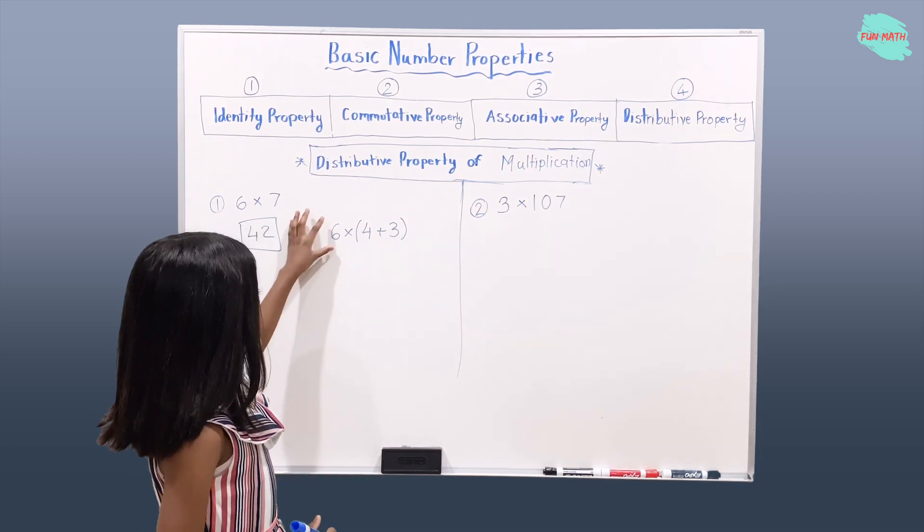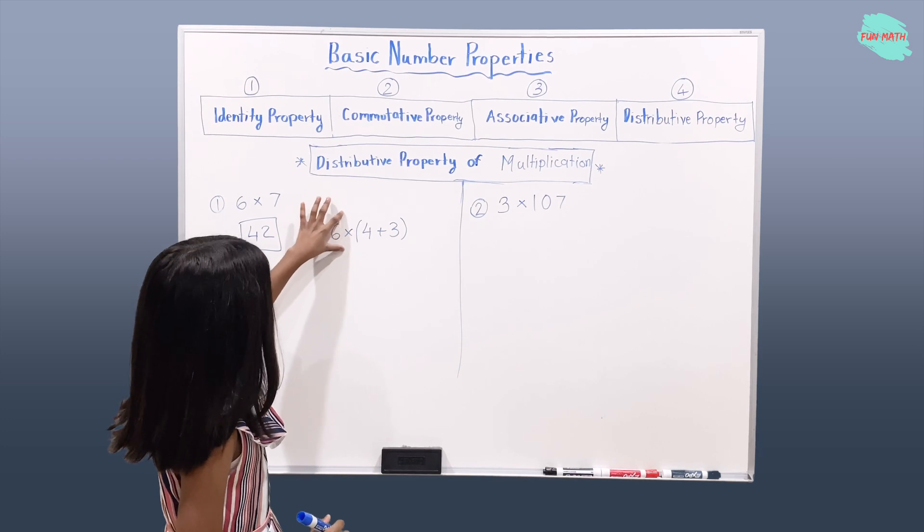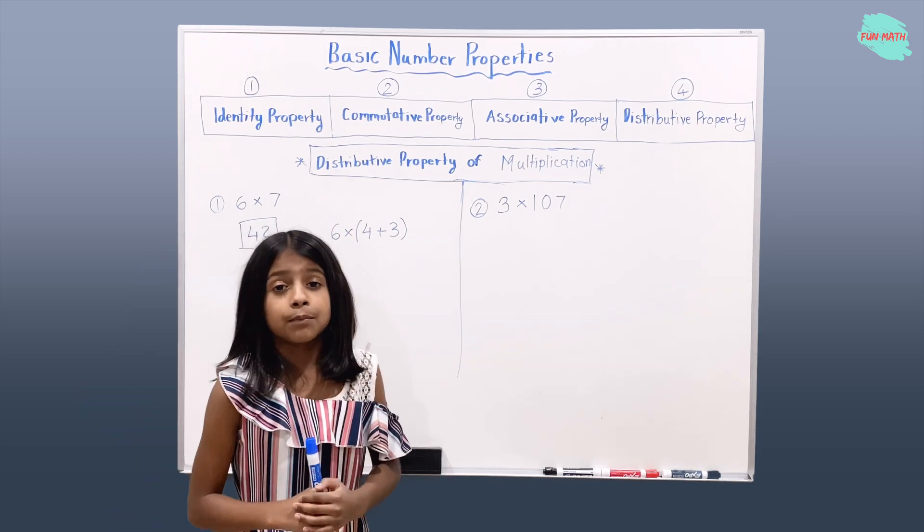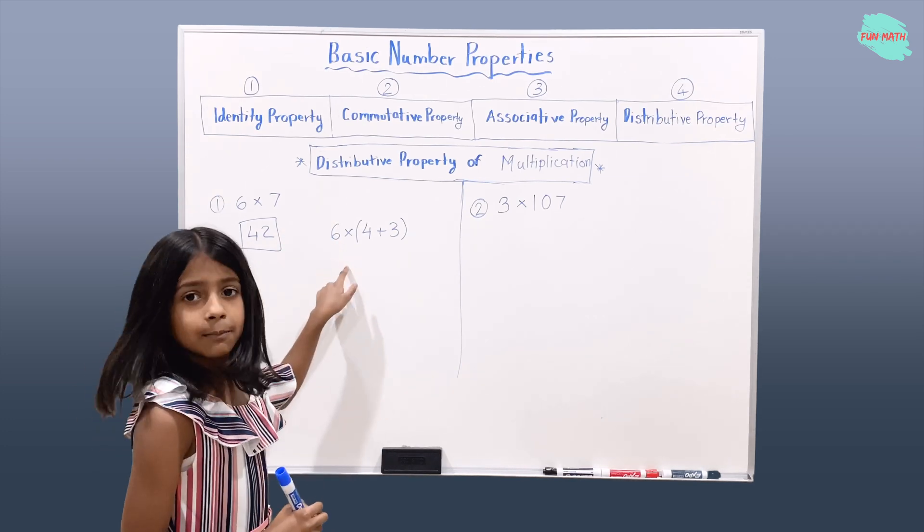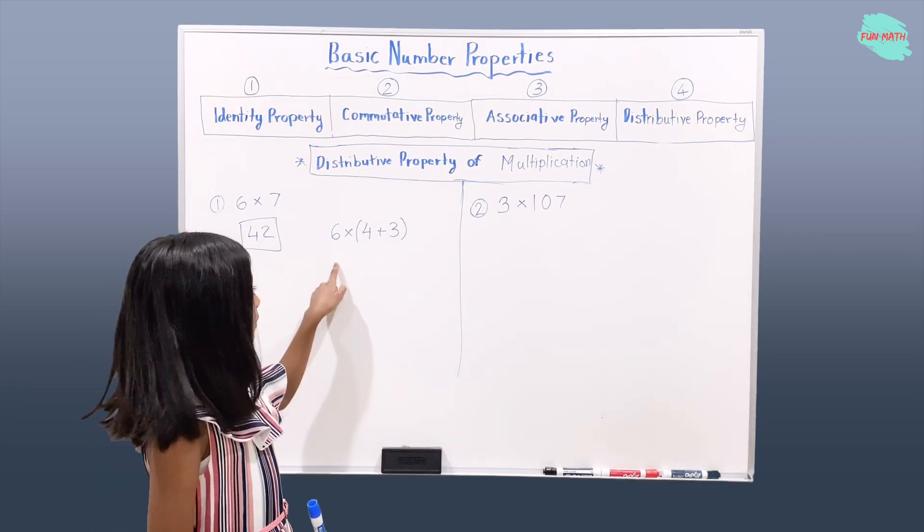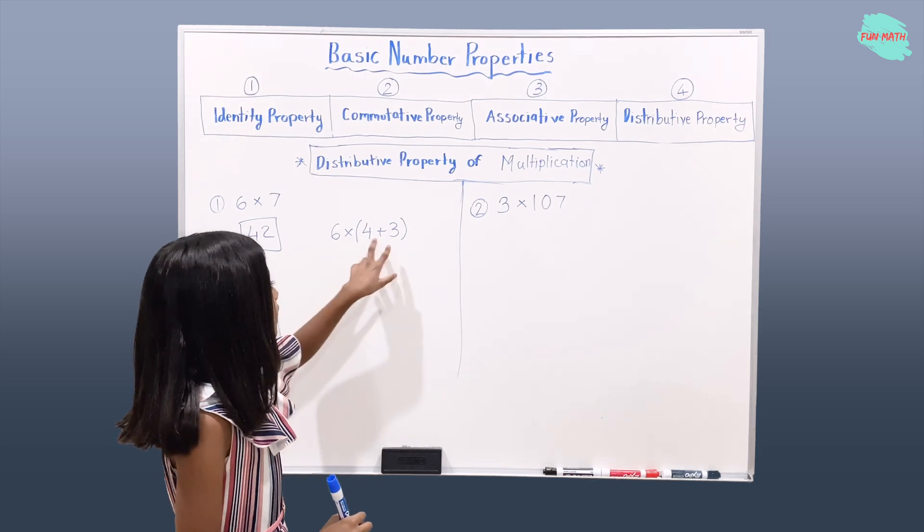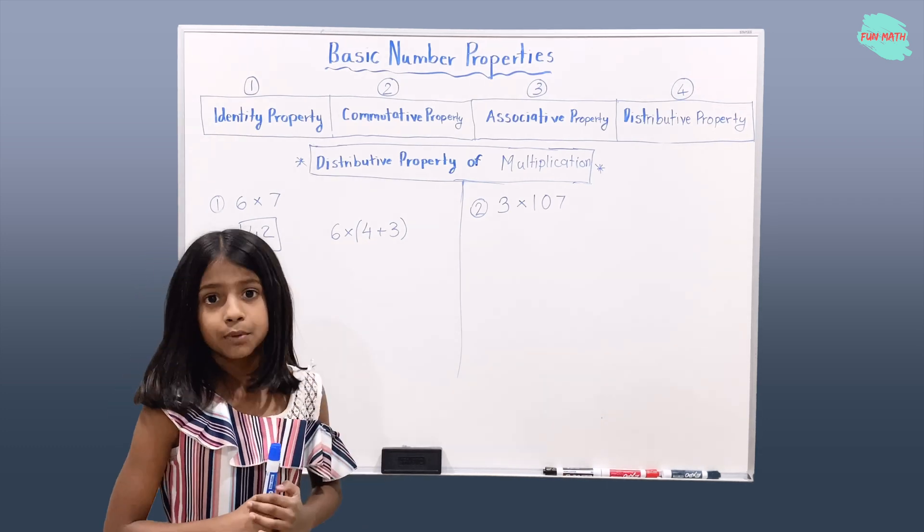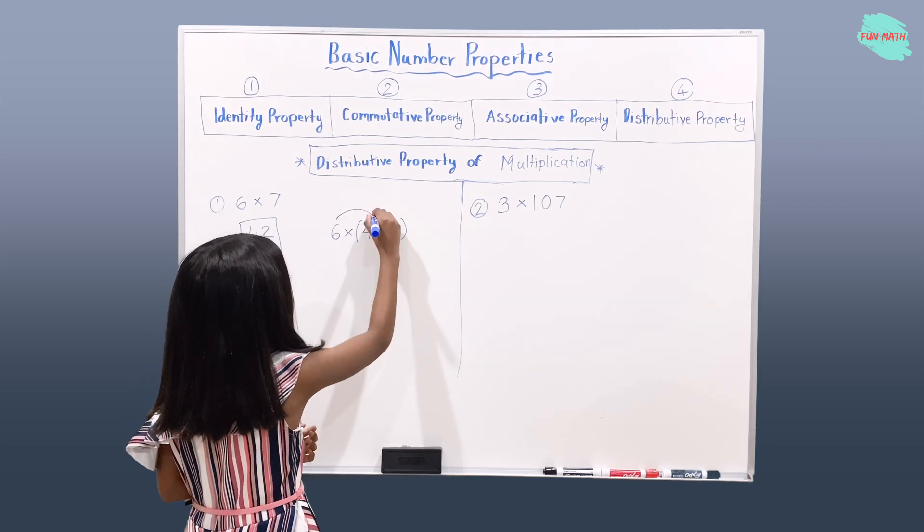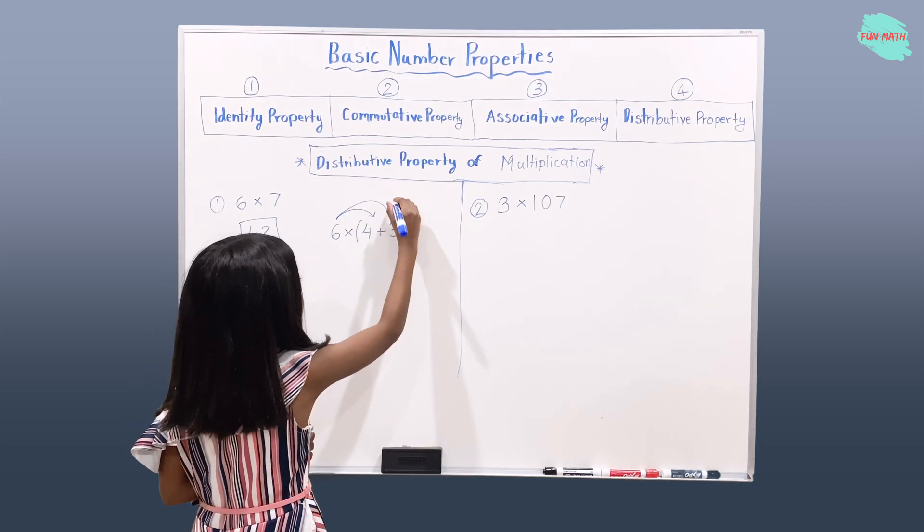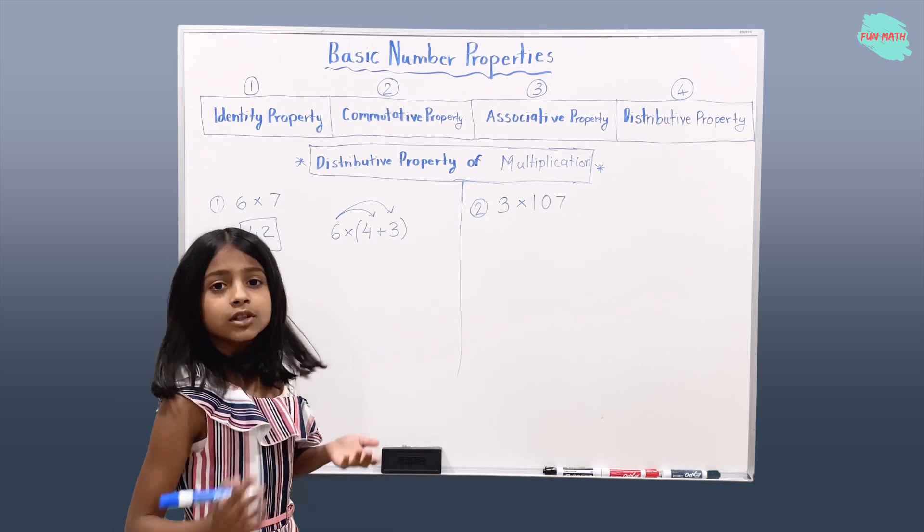Okay, so here is the number outside the parentheses. You're going to multiply that number twice with those numbers in the parentheses. Okay, so that means we're going to multiply 6 by 4, 6 by 3, and then add those two multiplications.